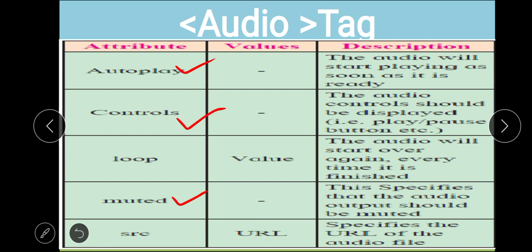The first attribute is autoplay — the audio will start playing as soon as it is ready. That means the moment your audio appears on the web page, it will start playing immediately once fully downloaded. The second attribute is controls — it displays play/pause buttons and other controls during audio playback.